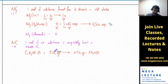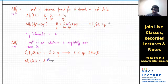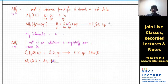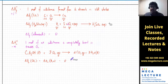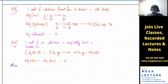Also remember: enthalpy of combustion of things that have already burned in excess oxygen — like CO₂ or H₂O — is zero, because they can't further react with oxygen. Nothing is going to happen. A lot of times, for a lot of reactions, enthalpy of formation and enthalpy of combustion can represent the same reaction.